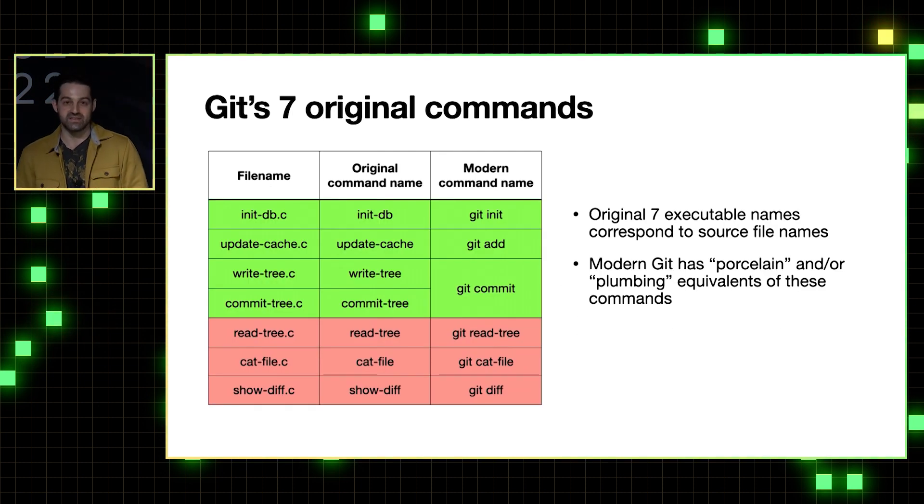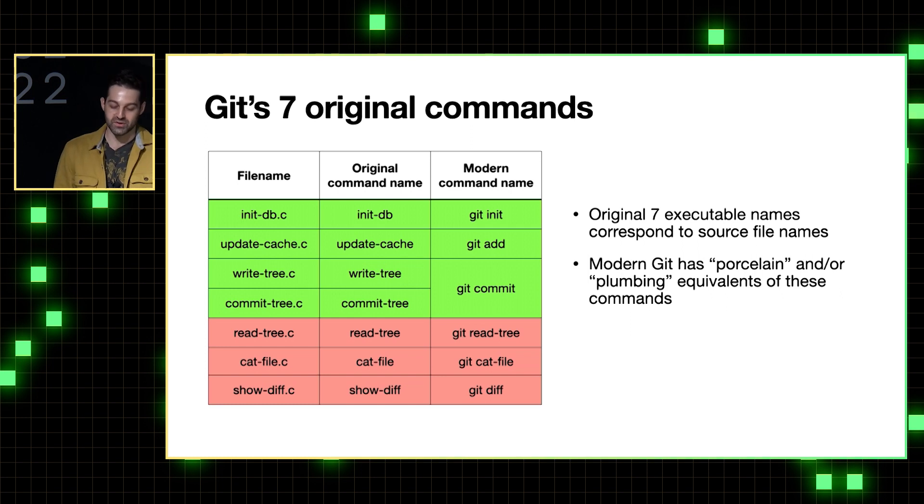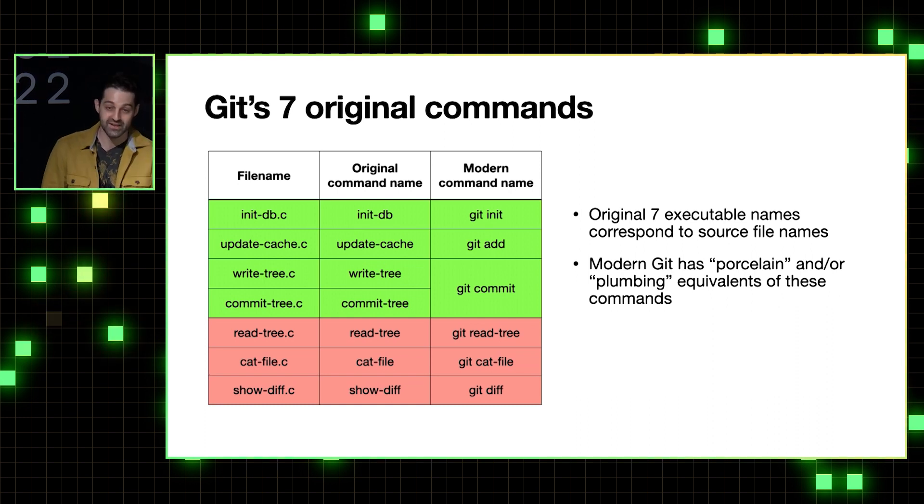So Git's initial commit contains a .c source file for each of Git's original seven commands. And you can see those source files in the left-hand column here. When compiled, this results in seven executables, one for each command. You can see those here in the middle column. So, for example, the initdb.c source file compiles to the initdb executable.